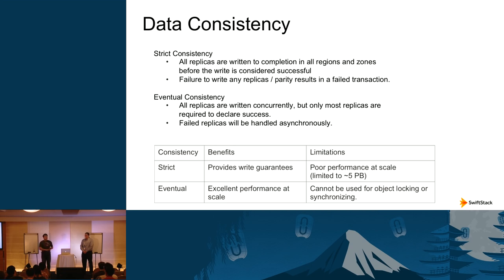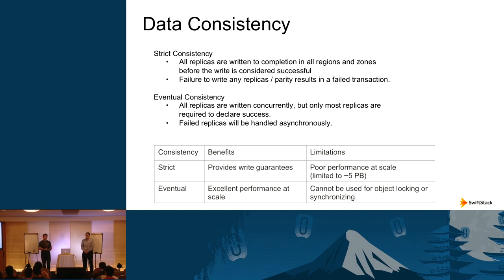Eventually consistent systems are slightly different. When you initiate a write, multiple copies are written out simultaneously. If three writes are happening and two complete — more than half — the write is considered successful. If that last piece did not complete, the system will redo that write asynchronously afterwards. For example, if a third data center is having a network outage or a disk needs to be replaced, the system will self-heal.